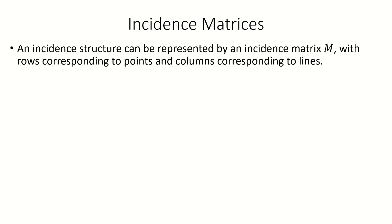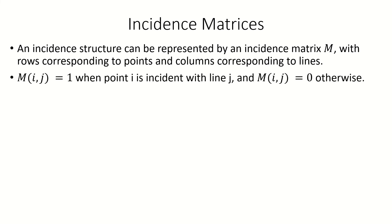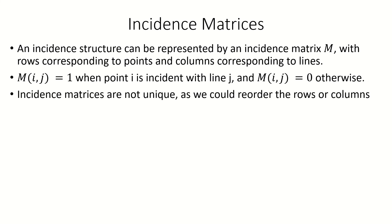Any incidence structure can be represented by an incidence matrix, where the rows correspond to points and the columns correspond to lines. The entry i,j in the matrix equals 1 if point i is incident to line j, or equals 0 otherwise. Notice that the incidence matrix is not unique — we could change our ordering of points and lines and obtain a different matrix that also represents the incidence structure. However, they are unique up to permutations of the rows and columns, and any incidence matrix allows us to recover the entire structure.